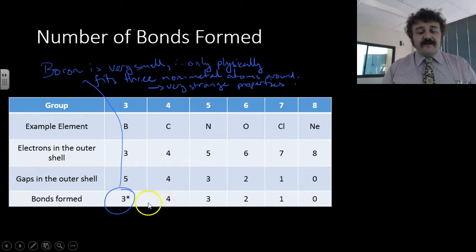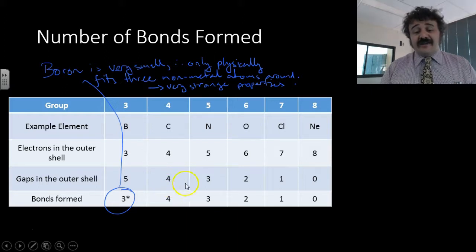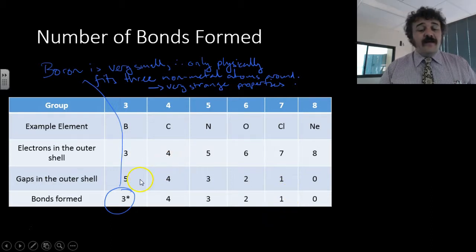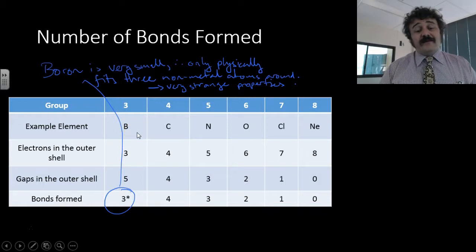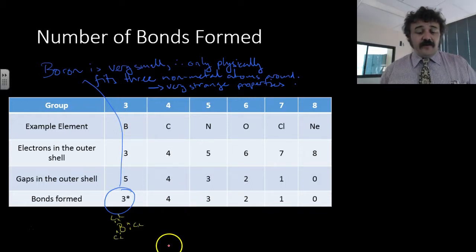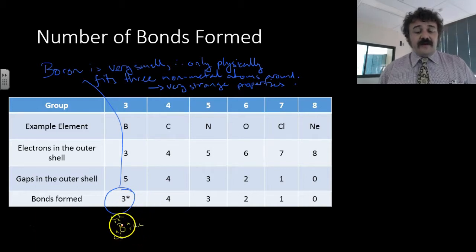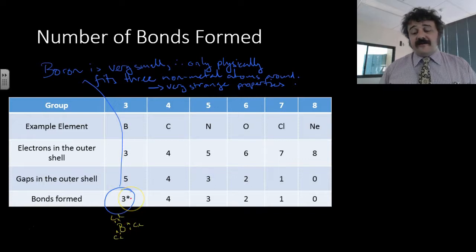Whereas if you look at all the other ones, however many electrons or how many gaps they have in their outer shell, that's how many bonds they form. And that's really simple, that actually makes the job quite easy. Whereas boron is a weird one, it doesn't have the room, so it only forms three. So it looks like this. Here we have boron in the middle bonded to three chlorines. Boron, because it's so small it can only fit three bonds around it.